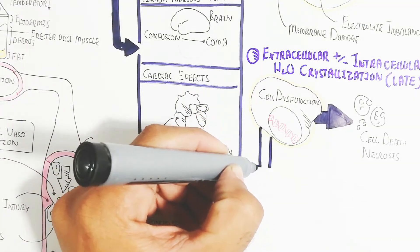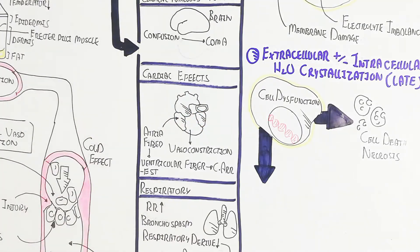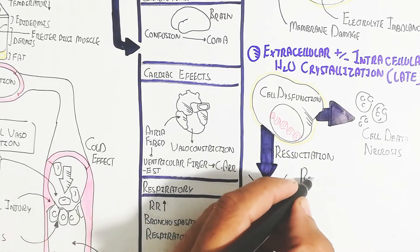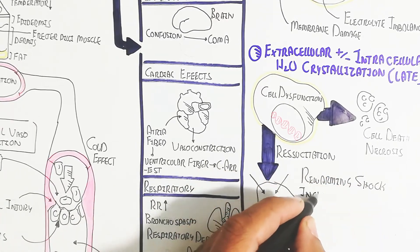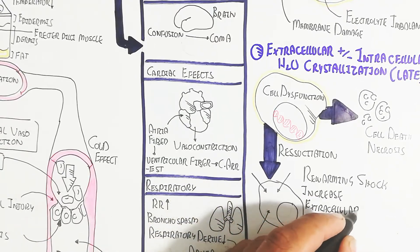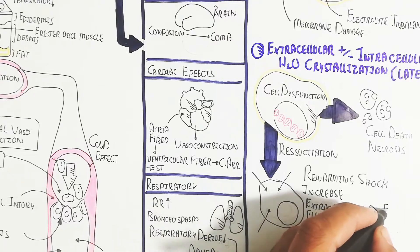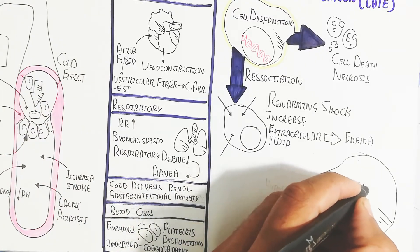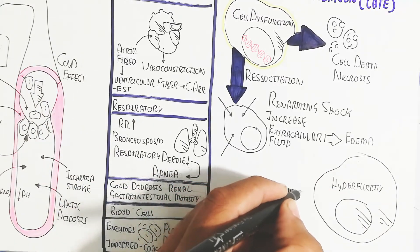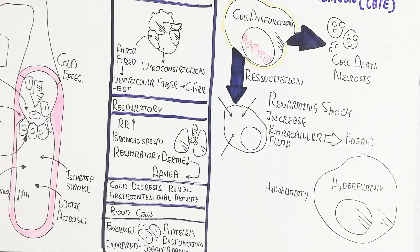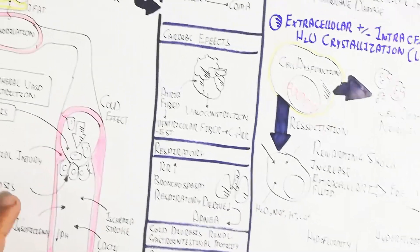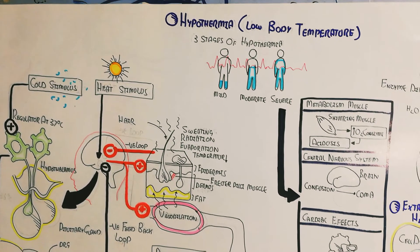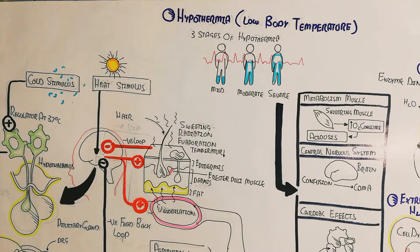Resuscitation of severe hypothermia patients carries risks. Rewarming causes rewarming shock. Extracellular fluid moves into the intracellular space, leading to cellular edema. As extracellular fluid accumulates, edema develops. Further resuscitation can lead to hyperfluidity in the extracellular fluid. This summarizes the discussion of hypothermia — low body temperature — and its complications.